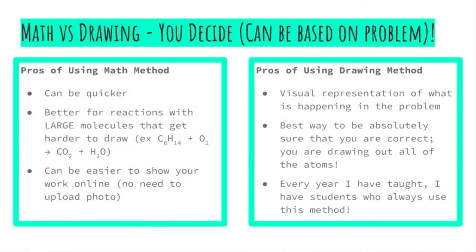Both of these methods can be useful. You can decide based on the problem which method you want to use. The math method can be quicker for some people and it's definitely better for reactions with large molecules. And it can be easier to show your work online. You don't need to take a picture of your work and upload it. The only downside of using the math method is that it isn't as visual. You can be absolutely sure that you're correct if you're drawing out all of the atoms. Every year I have students that use the drawing method even for more complicated problems. And then I also have people that sometimes will switch back and forth depending on the problem. So it's your call.